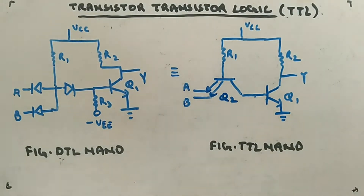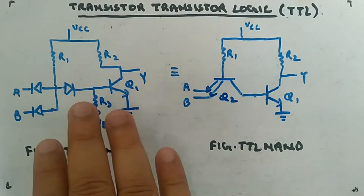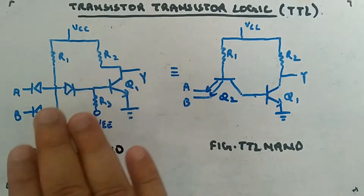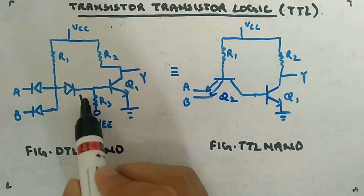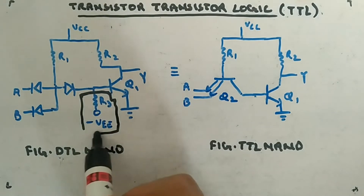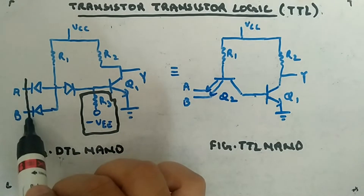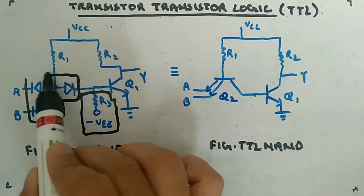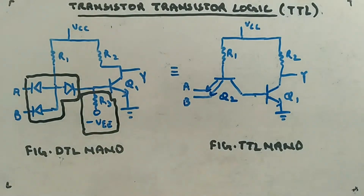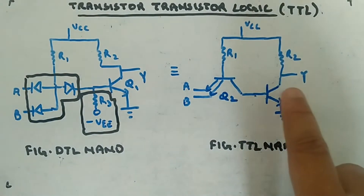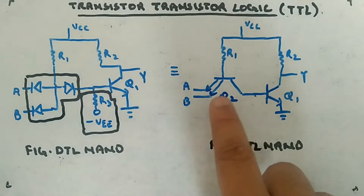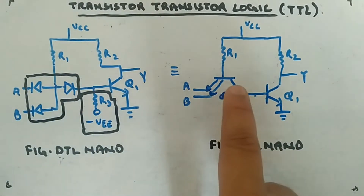Q1 is the transistor — we have already seen the working of this in DTL circuits. This serves as a NAND gate. Now I am modifying it: I will be removing this part and replacing the three-diode combination with a multi-emitter transistor. Multi-emitter means it has more than one emitter with the same base and collector. R1 and R2 remain the same.